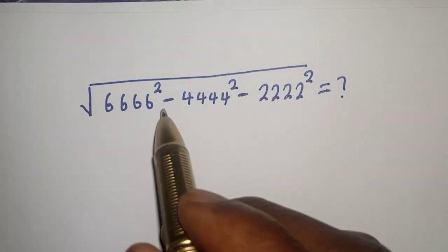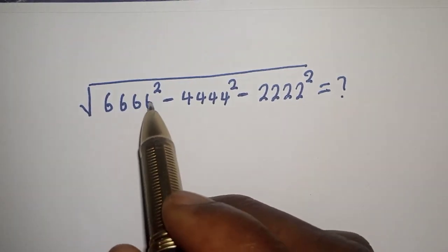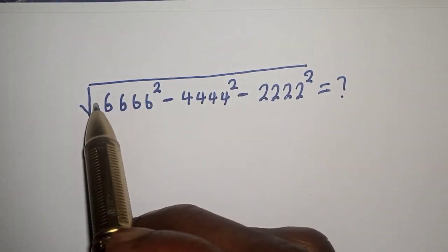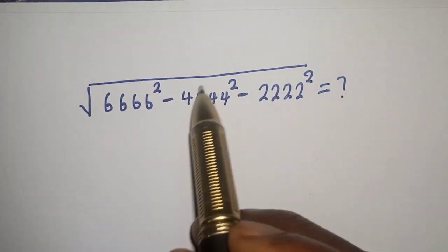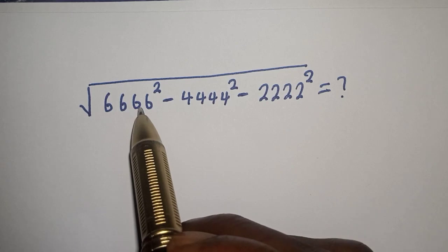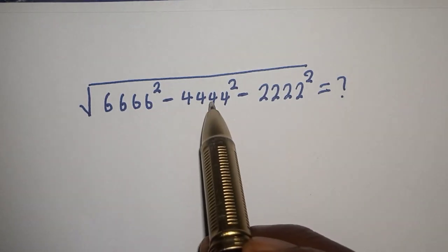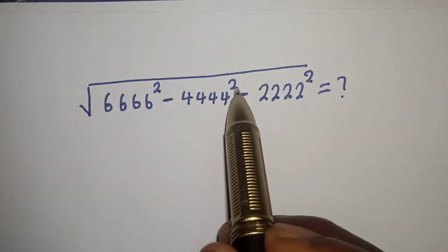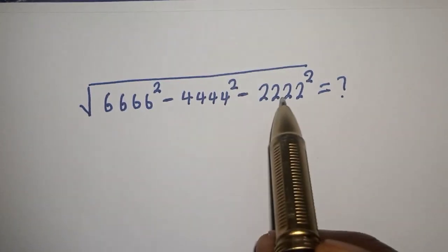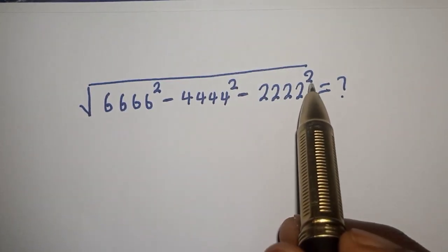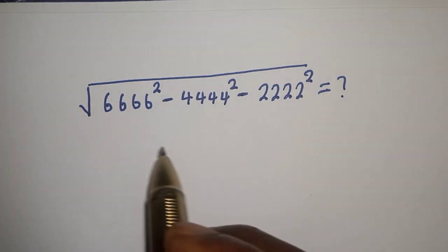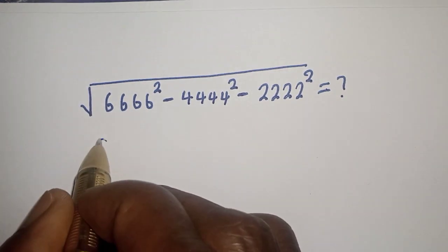Hello. How to simplify this radical problem: square root of 6666 squared minus 4444 squared minus 2222 squared. Solution.